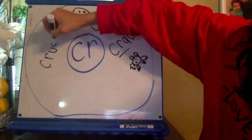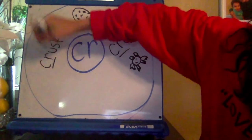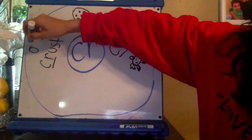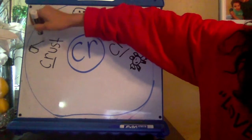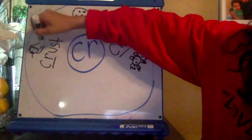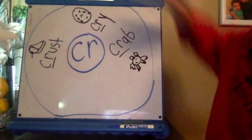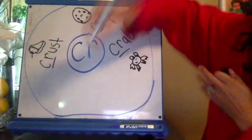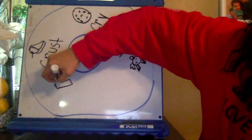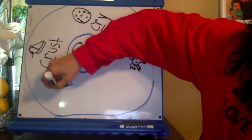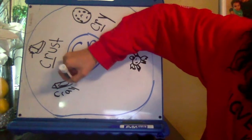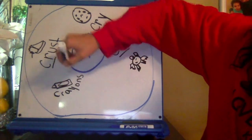Crust — so like the crust on a pie. A piece of pie. The crust, so delicious. Crust. Crayons — we color with these all the time. So like that, a little big crayon. Crayons.